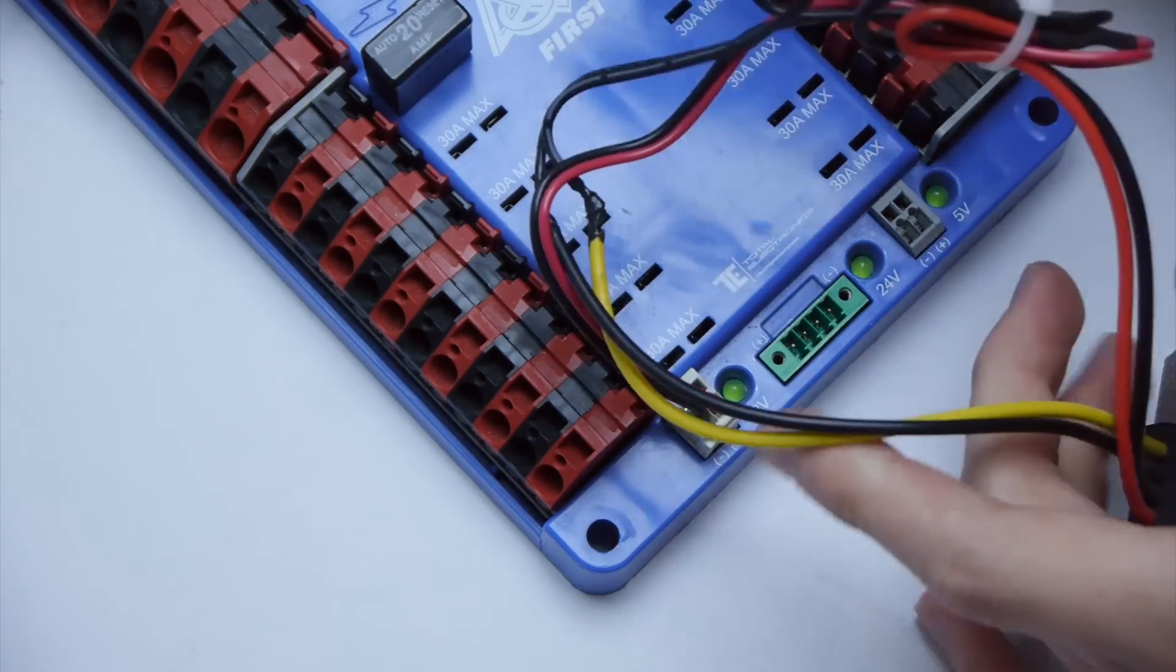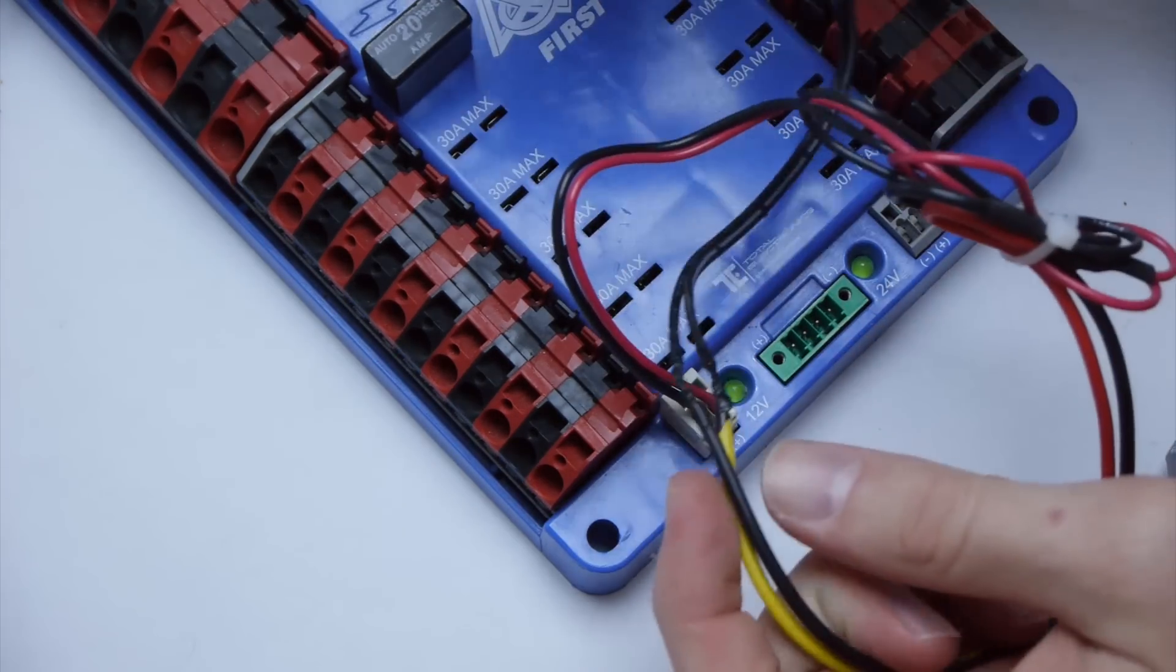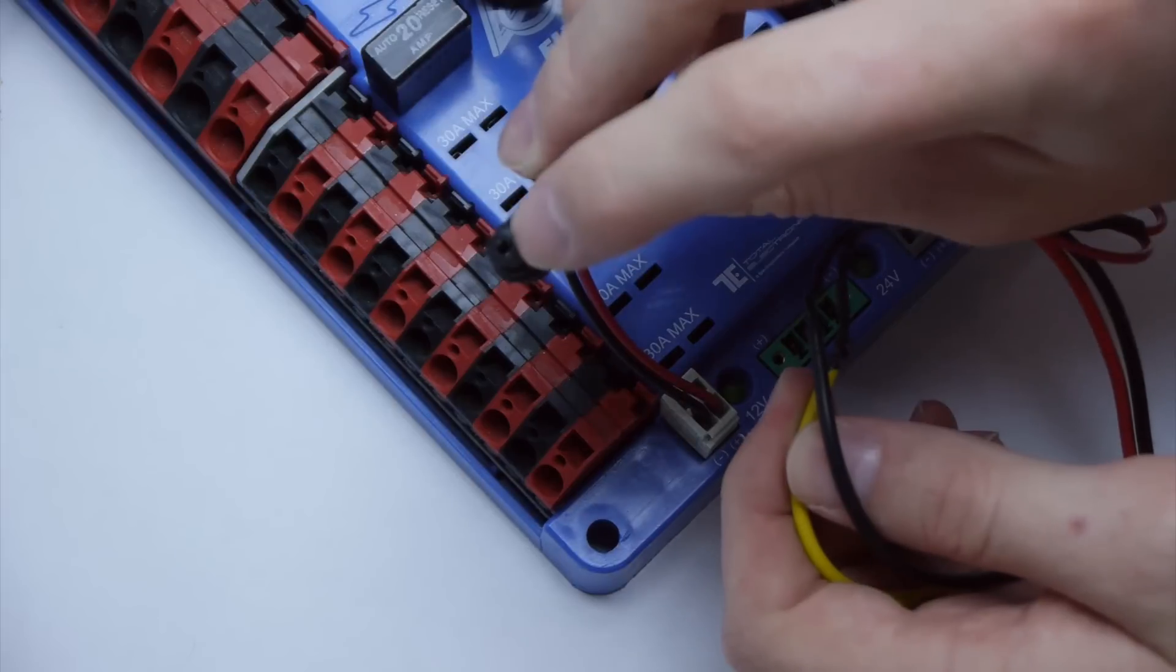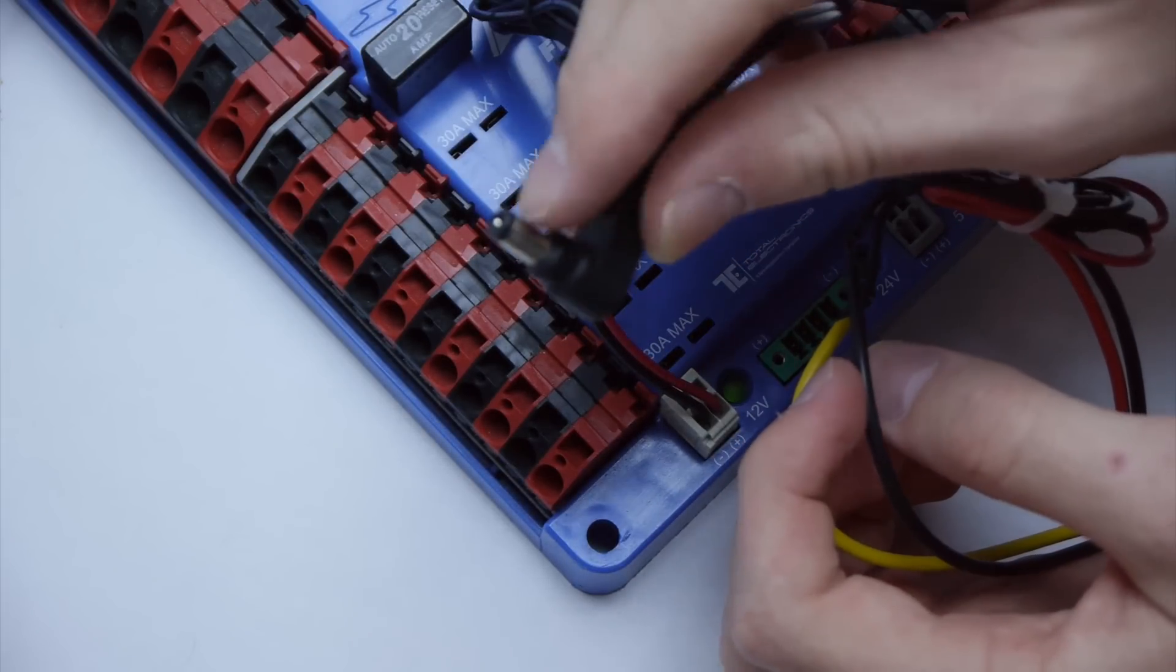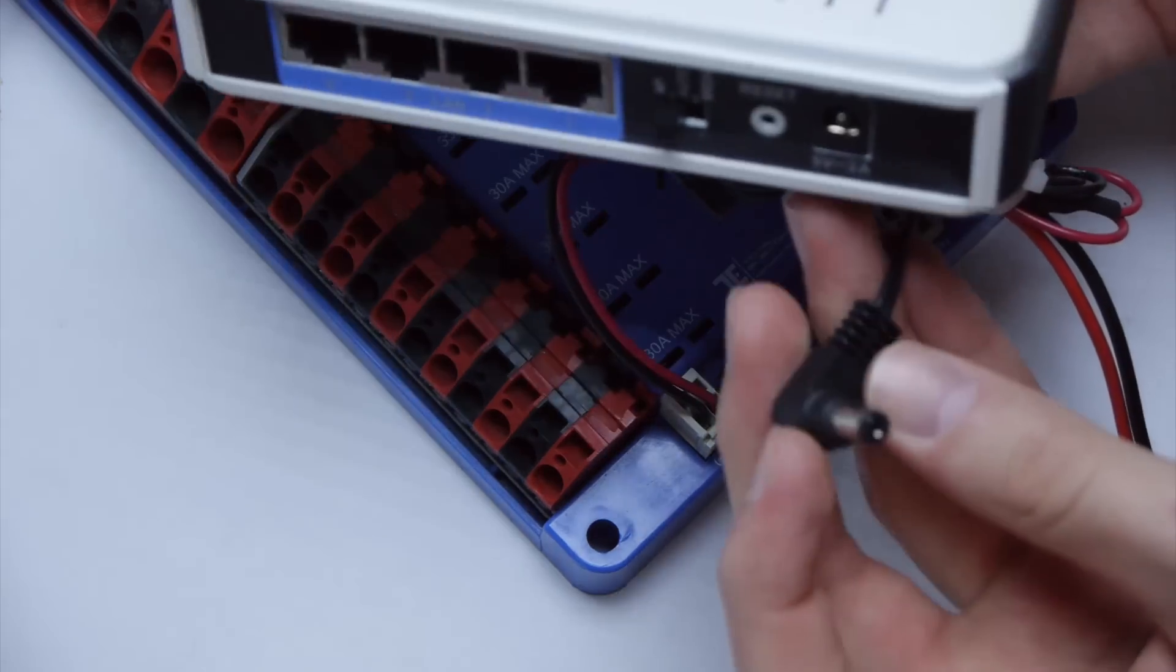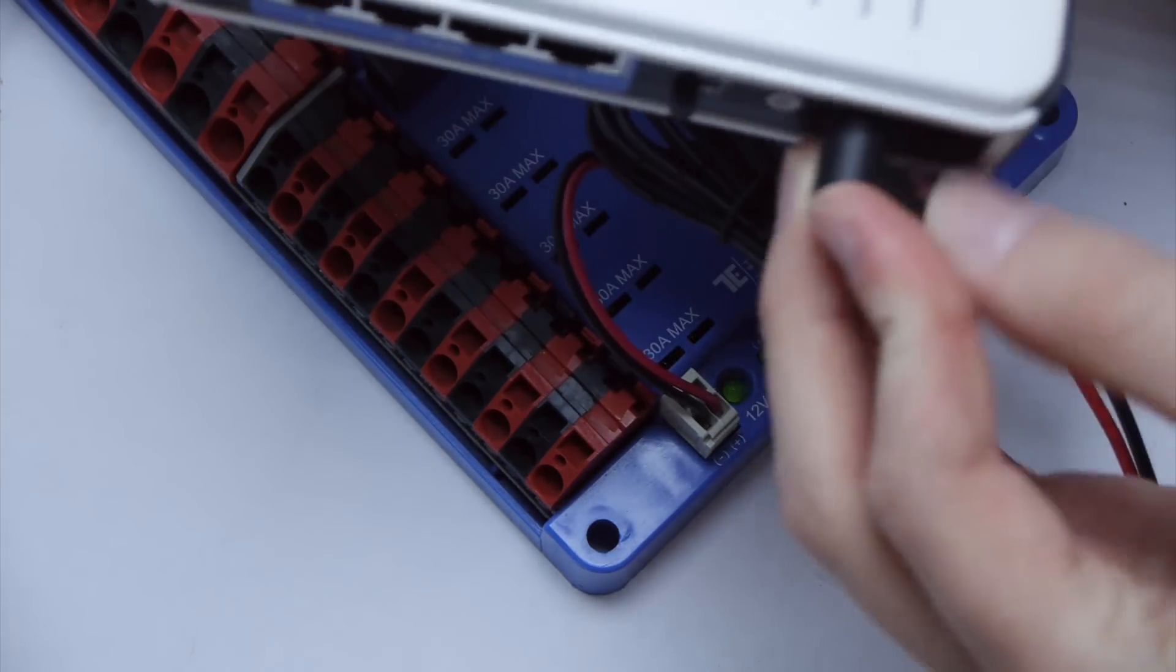On the other side, you connect the yellow wire to the positive or inner part of this connector and the black to the outer part. And all you have to do is plug it into your radio.